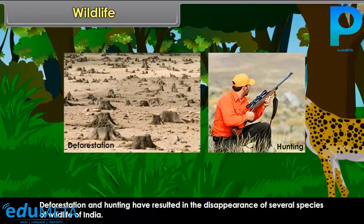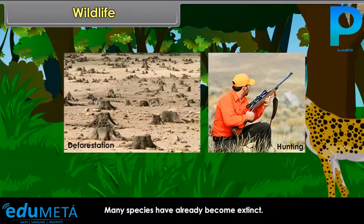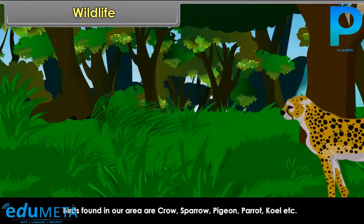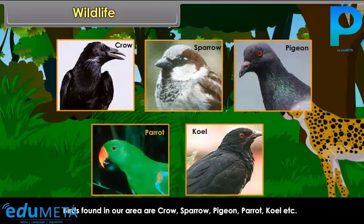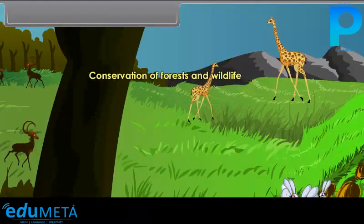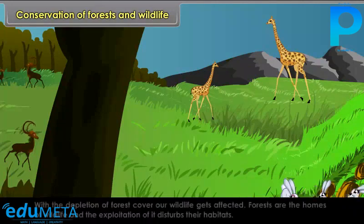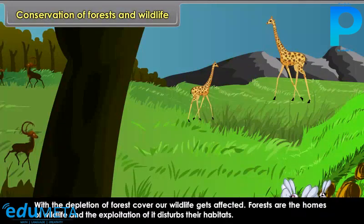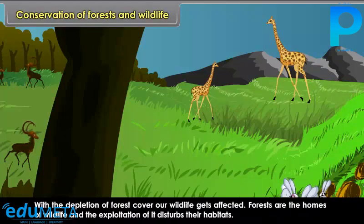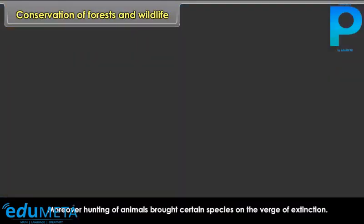Deforestation and hunting have resulted in the disappearance of several species of wildlife in India. Many species have already become extinct. With the depletion of forest cover, wildlife gets affected. Forests are the homes of wildlife, and the exploitation of forests disturbs their habitats. Moreover, hunting of animals has brought certain species to the verge of extinction.